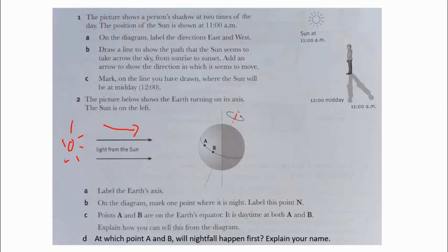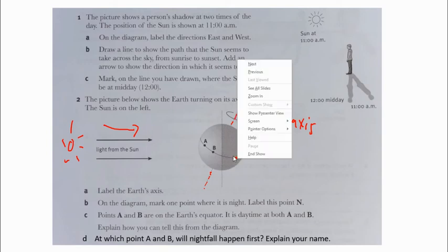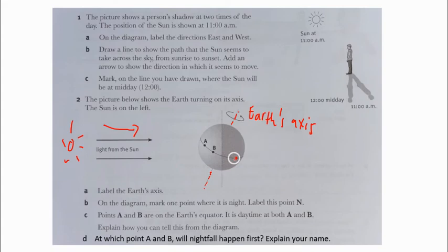The Earth axis is this one. Part B: On the diagram, mark one point where it is night and label this point N. I will give one point here, or here, or everywhere in the half of the Earth, and then label it with N because it is night.